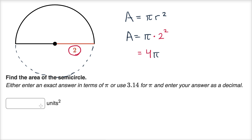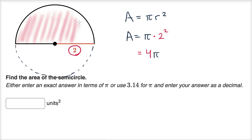Now I wouldn't put four pi here because that would be the entire circle. They want the area of just the semicircle, of just this region right over here. Well, the semicircle is half of the circle. So if I want the area of the semicircle, it's just going to be half of this.